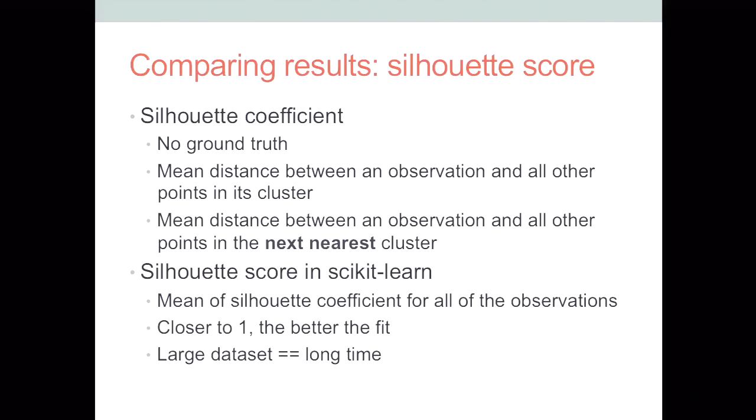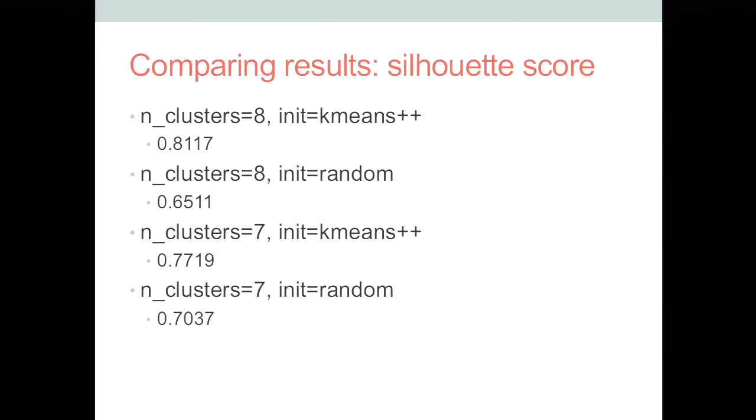So it does this for each observation and assigns it a score between negative one and one. And the closer it is to one, the better fit that that cluster is for that particular observation. So in scikit-learn, the silhouette score function computes this and then takes the mean of the silhouette coefficient for all of the observations. And again, closer to one, the better the fit. This scoring method takes a really long time to run. It's not very efficient. I think I had about 20,000 instances, and it took a good five minutes to run. But it is useful. So here are our scores. You can see for eight clusters with k-means plus plus as init, we get a pretty good score, .81. Eight clusters with our random selection of initial cluster centers is not very good at all. In fact, it is the worst one of the bunch. Seven clusters with k-means plus plus is okay. Again, seven clusters with random, though, not so good. So in this case, the default wins.